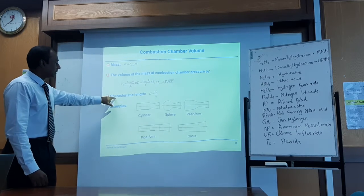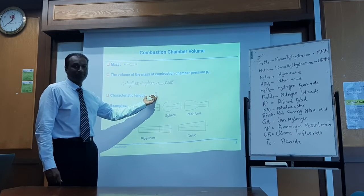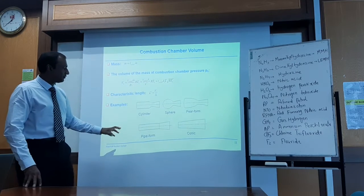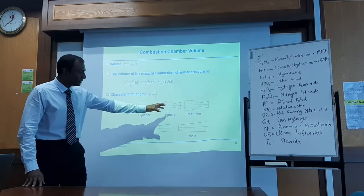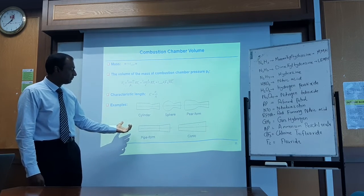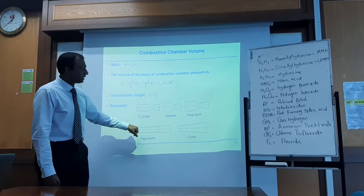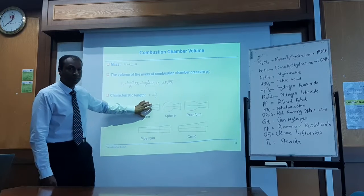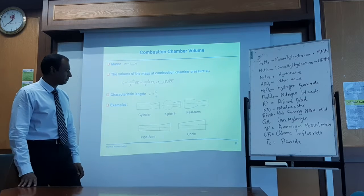Once you have the volume, another important parameter is the characteristic length, always defined with respect to the throat. You can design various shapes: cylinder type is quite common, sphere type is also common. The other shapes — like pipe type — are quite rare. These are the typical investigated designs for space applications.